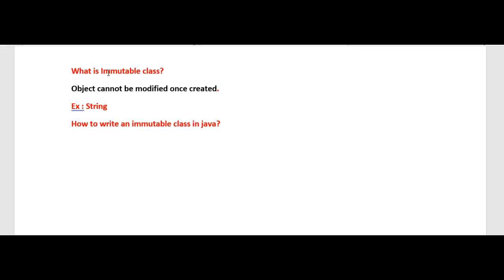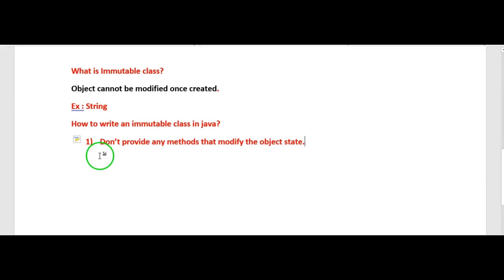The first rule is: don't provide any methods that modify the object state. We should not provide any methods which modify the state of an object — mostly try to provide only getter methods.